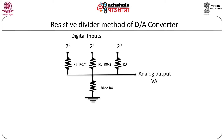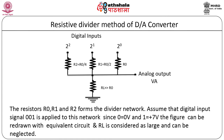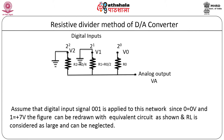We have to calculate the analog equivalent for different digital inputs. For this calculation, we assume that the digital input signal is 001, where 0 equals 0 volt and 1 equals +7 volt. For digital input 001, since voltage levels V1 and V2 are 0, the equivalent circuit can be redrawn. We can calculate the equivalent analog voltage VA using Millman's theorem.